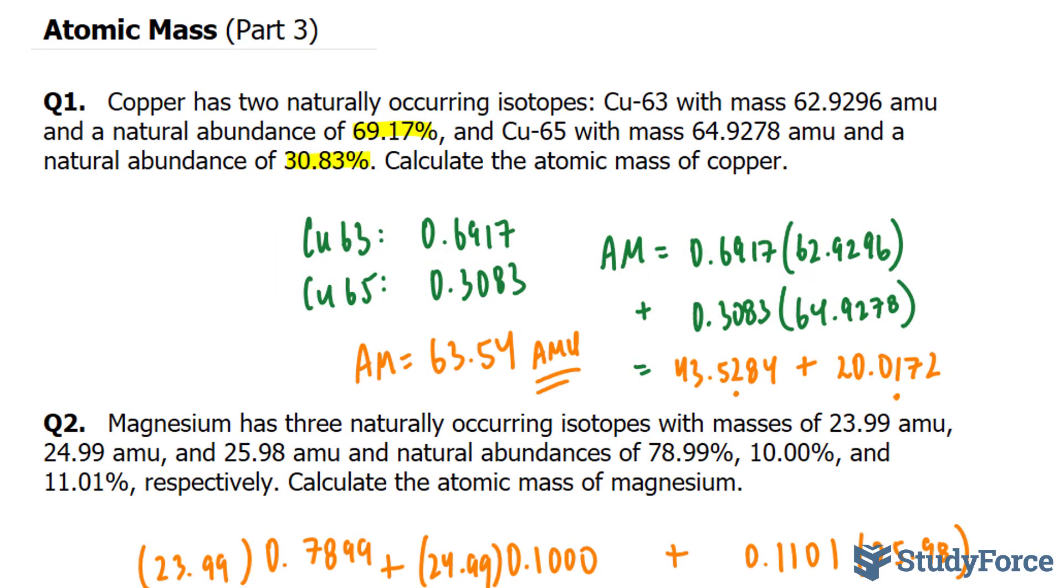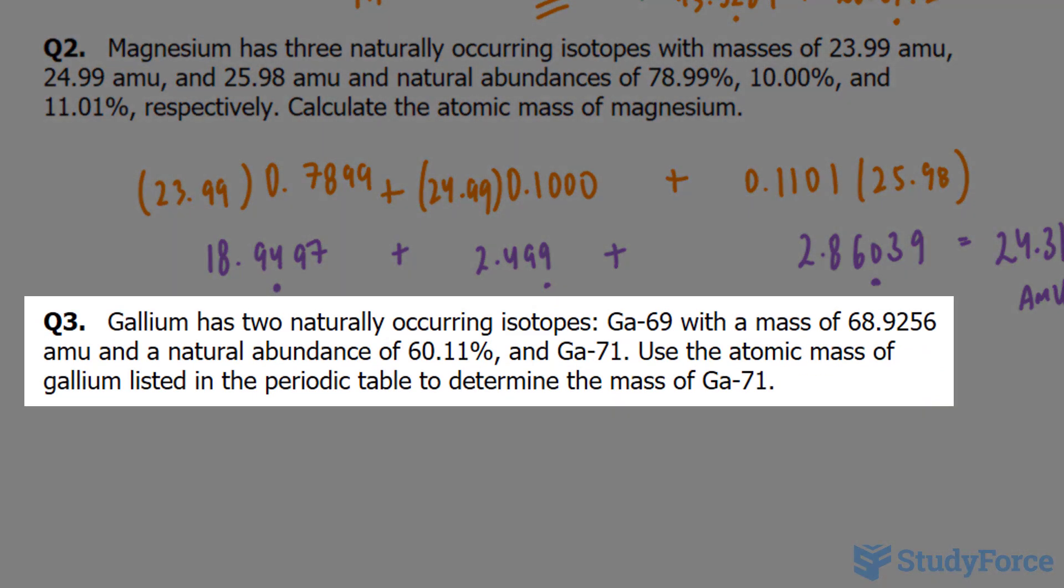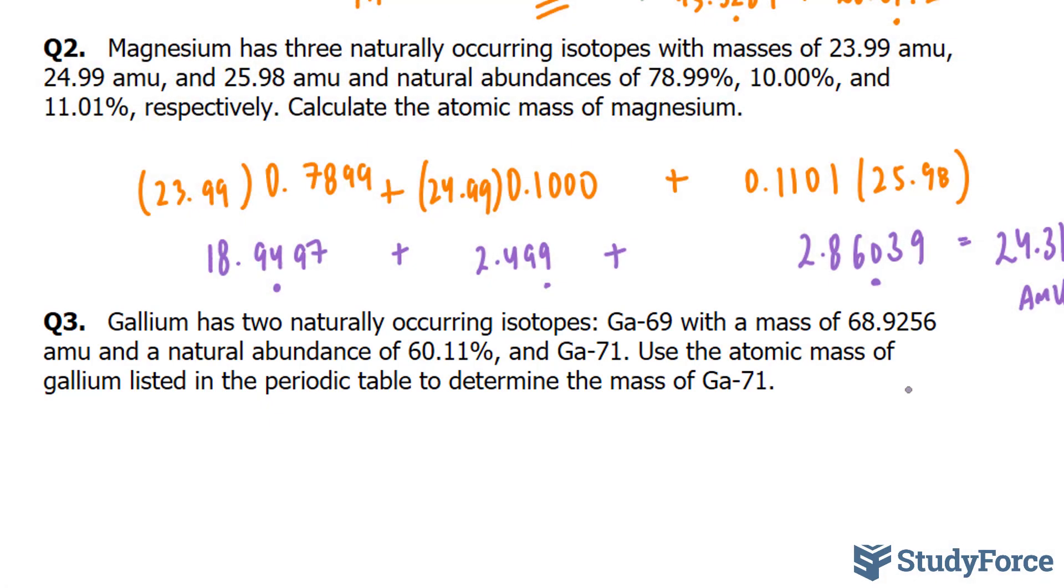In part three of this series, we'll learn how to answer the last question, which reads: Gallium has two naturally occurring isotopes, gallium-69 with a mass of 68.9256 amu and a natural abundance of 60.11%, and gallium-71. Use the atomic mass of gallium listed in the periodic table to determine the mass of gallium-71.